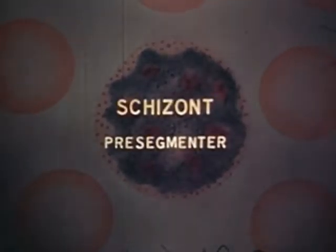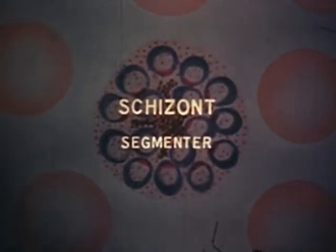As the chromatin mass divides, the parasite is called a schizont, meaning divider. The early form of the schizont is called a pre-segmenter, since no division of the cytoplasm is yet observed. When the cytoplasm begins to divide, it is called a segmenter and contains 12 to 24 new parasites. Such reproduction occurs every 42 to 48 hours.